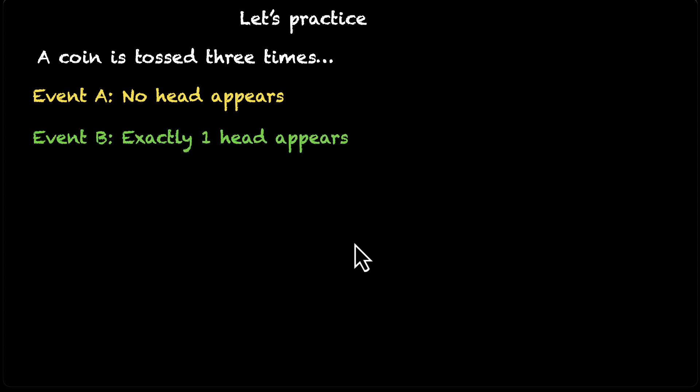Okay. So let's quickly practice what you've just learned. Let's say we have this scenario where a coin is tossed 3 times. And let's say we have these 3 events. Event A is when no head appears in all 3 of them. Event B is when exactly 1 head appears. And event C is when at least 2 heads appear. Find the probabilities of all 3 of them. Pause the video. Think about it.